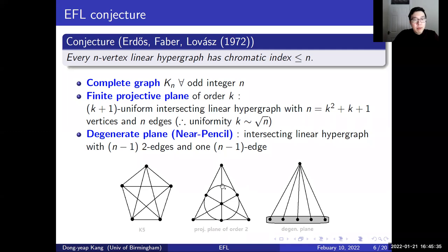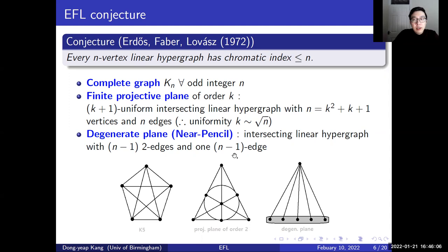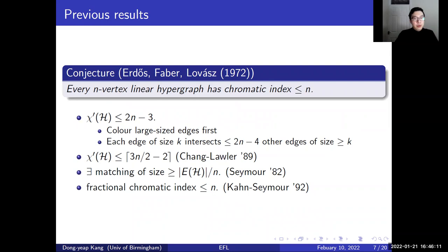The final example is a degenerate plane, or near pencil, which is an intersecting linear hypergraph with n-1 edges of size 2 and one single large edge of size n-1. Because of the vastly different structure of these extremal examples, it contributes to the difficulty of proving this conjecture.